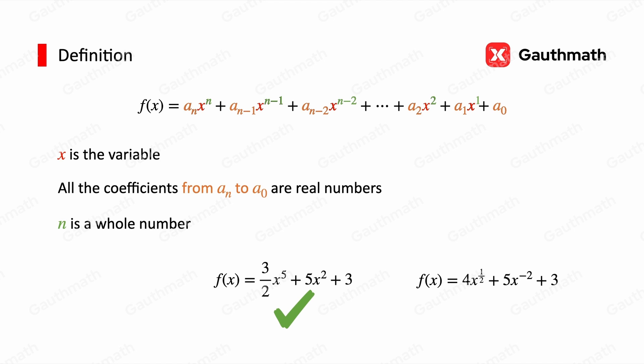For the second function, f(x) equals 4x to the power of 1/2 plus 5x to the power of negative 2 plus 3. We can see that the exponents include a fraction, 1/2, and a negative number, negative 2. So the second function is not a polynomial function.